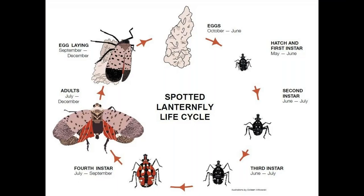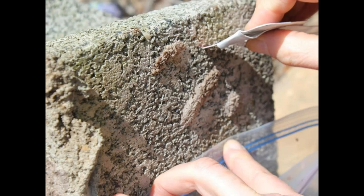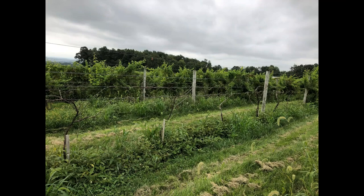The egg mass is one of the most interesting life stages because it's extremely hard to find. They lay eggs on pretty much anything — you can see them here on a piece of rock. It looks kind of like dry silly putty stuck on a surface and can be incredibly hard to spot, making it easy to spread the insect around. In Pennsylvania the grape industry has been hit really hard, but there are over 70 reported hosts so far, most of which are woody things including walnut, maple, and birch trees. Conifers don't appear to be hosts but can be used as transport, including Christmas trees.